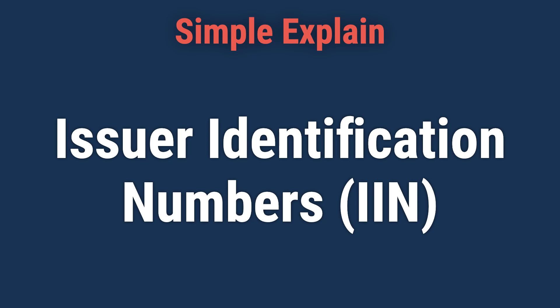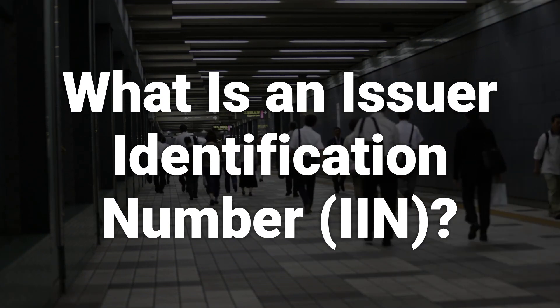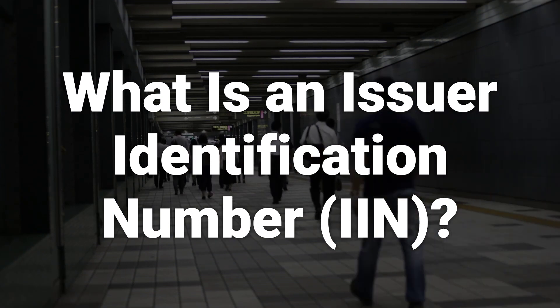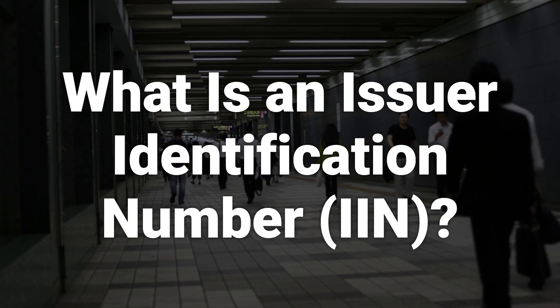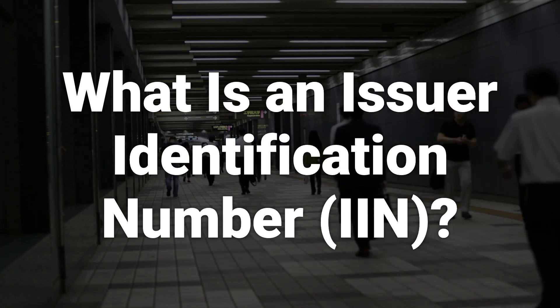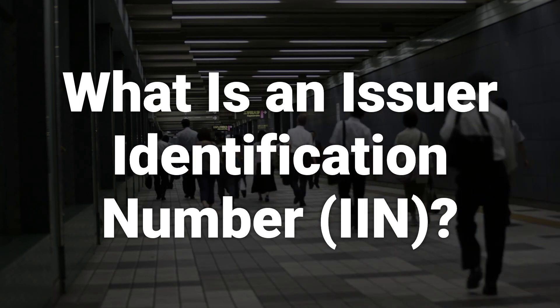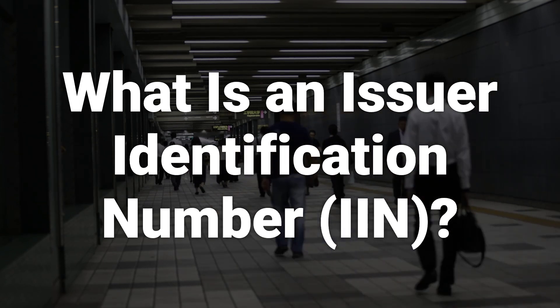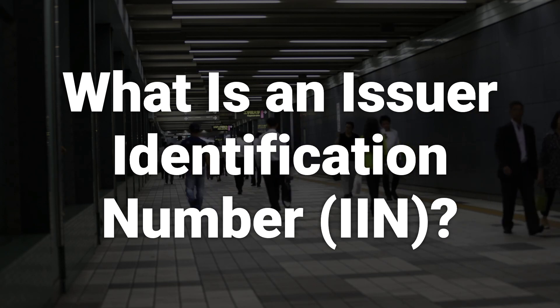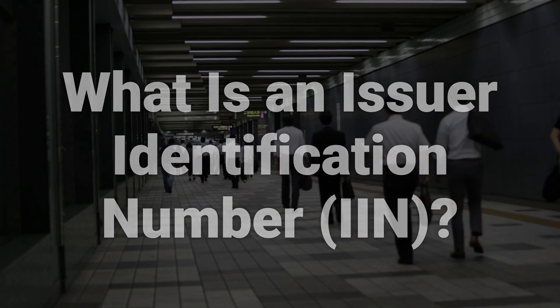Hi! Let's learn about issuer identification numbers. The issuer identification number on a payment card indicates which bank or other financial institution issued that card and is responsible for it. These numbers are found on credit, debit, and other types of payment cards worldwide. Issuer identification numbers are sometimes referred to as bank identification numbers, or BINs.